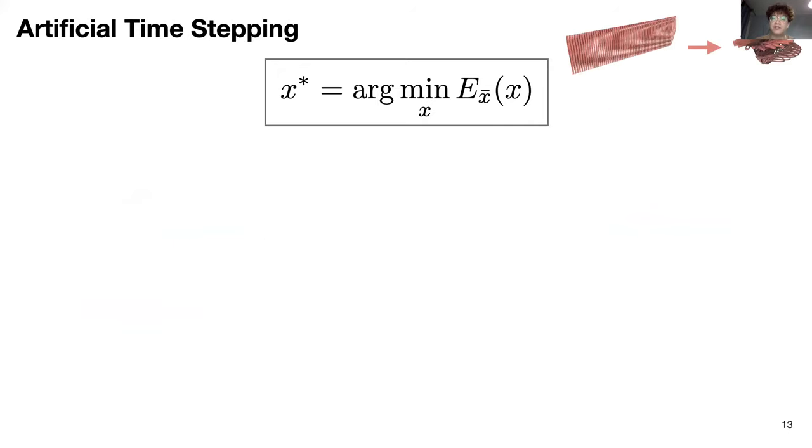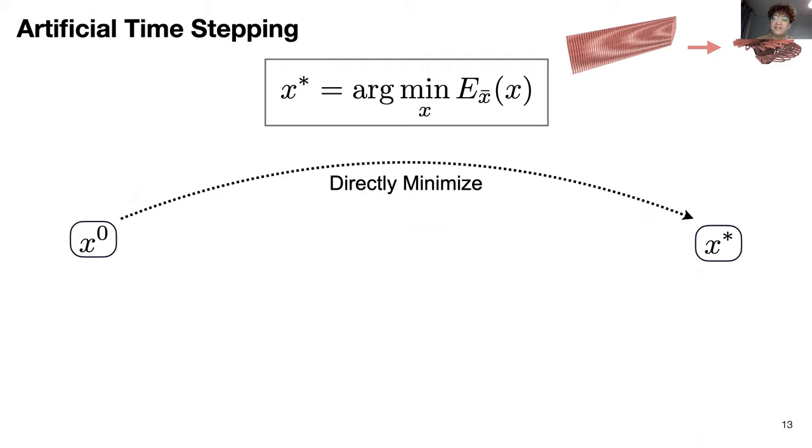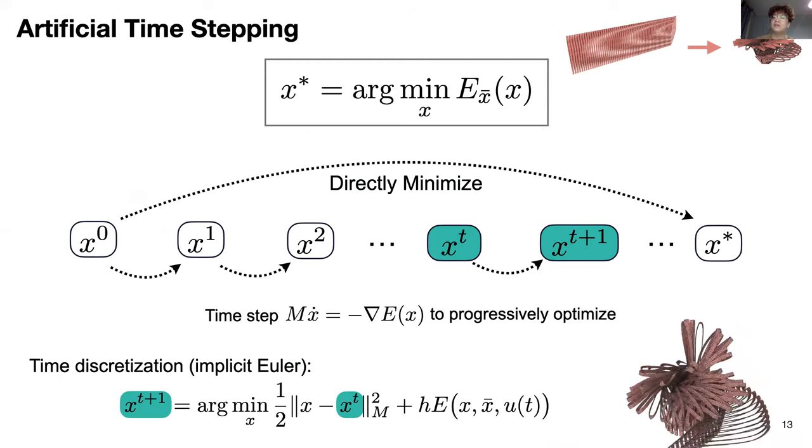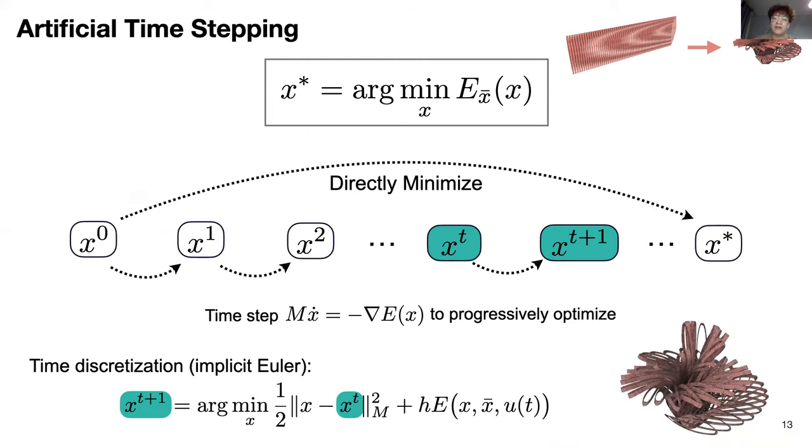Directly minimizing the energy when starting from a usual initializer is both extremely challenging and often undesirable in many applications. Instead, we time-step the gradient system with implicit Euler using large time steps. Effectively, as we see here, these have a very simple geometric interpretation. At each step, we just add a mass-weighted quadratic term penalizing the distance between the prior and current iteration positions. The ratio between quadratic terms and the original optimization objective is just the artificial step size h.